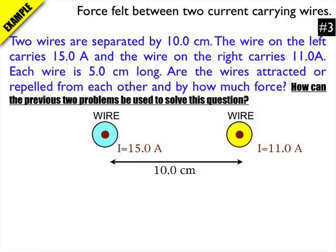So in this example, we're looking at the force felt between two current carrying wires. Two wires are separated by 10 centimeters. The wire on the left carries 15 amps, that's the blue one. And the wire on the right carries 11 amps, that's the yellow one. Each wire is 5 centimeters long. The first question is, are the wires attracted or repelled from each other, and by how much force?